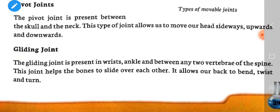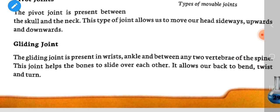The gliding joint is present in the wrists, ankles, and between any two vertebrae of the spine. This joint helps the bones to slide over each other. It allows our back to bend, twist, and turn.